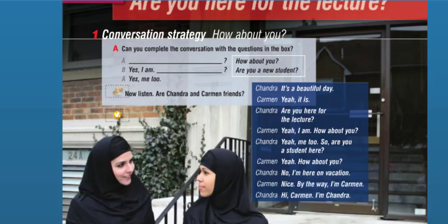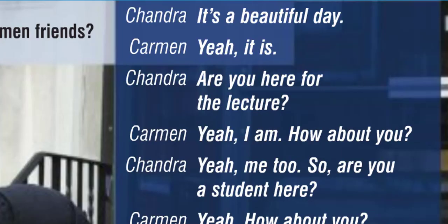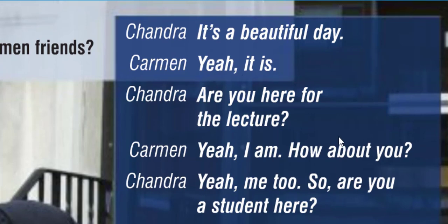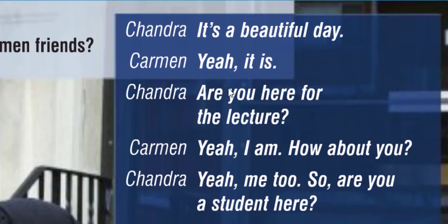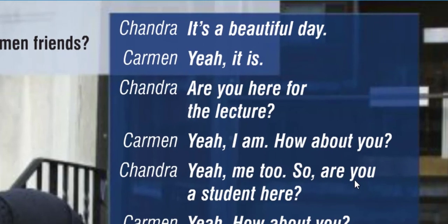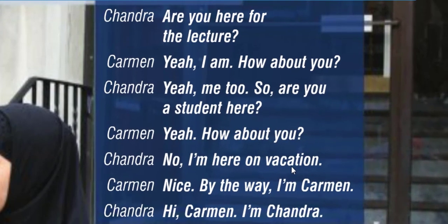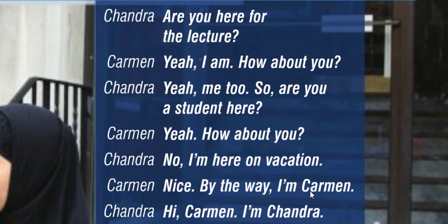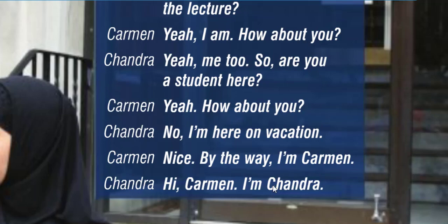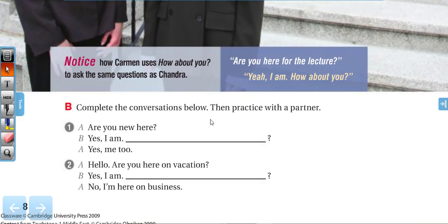Page 8, Lesson D — 'Are you here for the lecture?' Conversation Strategy: 'How about you?' Listen: are Chandra and Carmen friends? 'It's a beautiful day.' 'Yeah, it is.' 'Are you here for the lecture?' 'Yeah, I am. How about you?' 'Yeah, me too.' 'Are you a student here?' 'Yeah. How about you?' 'No, I'm here on vacation.' 'Nice. By the way, I'm Carmen.' 'Hi Carmen, I'm Chandra.' Now complete the conversations below, then practice with a partner.